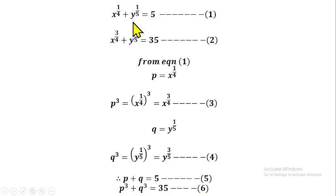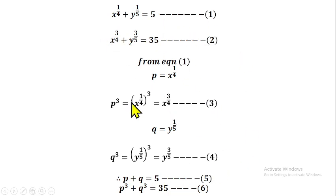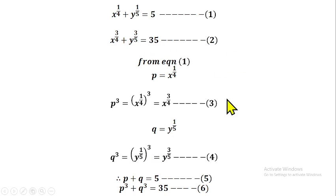Now, since we have called x to the power one over four as p and y to the power one over five as q, equation one reduces to p plus q equals five, which we call equation five. And since p cubed equals x to the power three over four and q cubed equals y to the power three over five, equation two reduces to p cubed plus q cubed equals 35, which we call equation six.